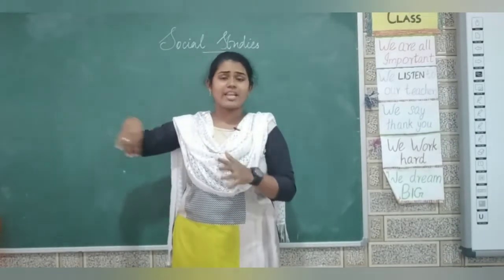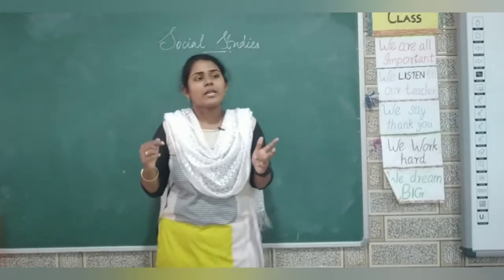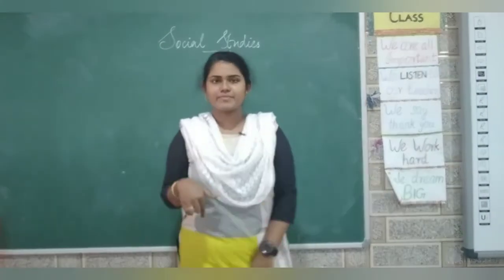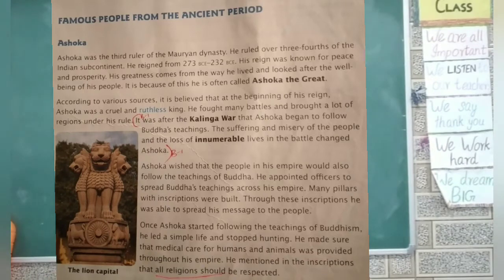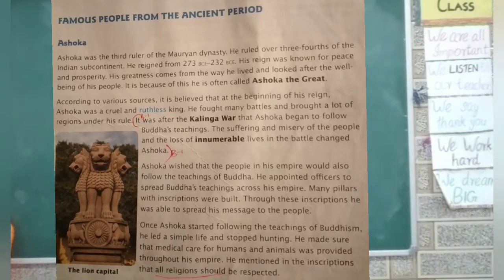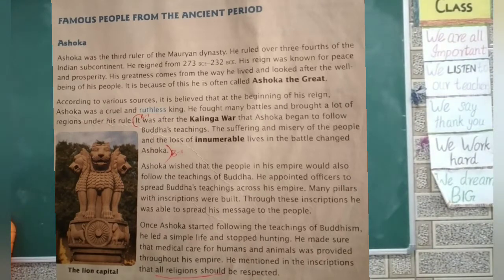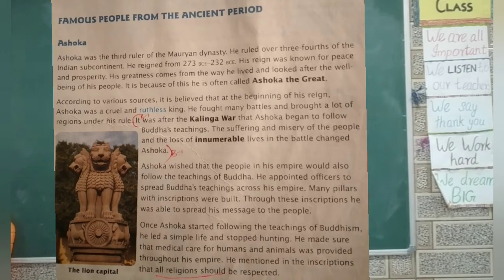Famous people can come from any field. Famous people from the ancient period — first, Ashoka. Ashoka was the third ruler of the Mauryan dynasty. He ruled over three-fourths of the Indian subcontinent. He reigned from 273 BCE to 232 BCE. His reign was famous for peace and prosperity.